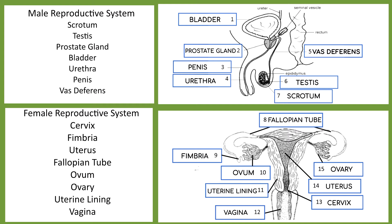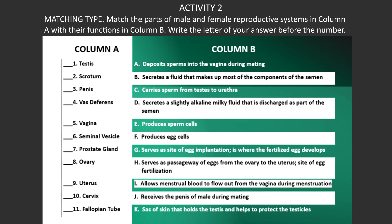This is a matching type activity. Match the parts of male and female reproductive systems in column A with their functions in column B, and write the letter before the number. I'll give you ten minutes because you are going to read the functions. Please start.